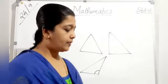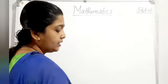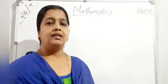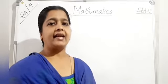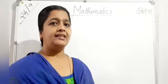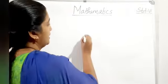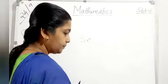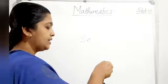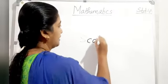Triangles are classified on the basis of sides. In a triangle where all three sides are unequal, that is known as a scalene triangle. S-C-A-L-E-N-E — scalene triangle.